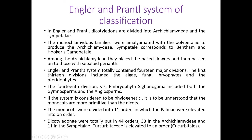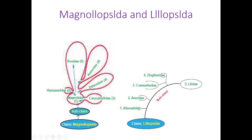These diagrams show the Magnoliopsida and Liliopsida and their evolutionary subclasses. At the top you will get the highly evolved plants. In this figure also the highly evolved plants are Rosidae, Asteridae, Zingiberidae, and Liliidae. They are the highly evolved, while the others at the base are the primitive classes.